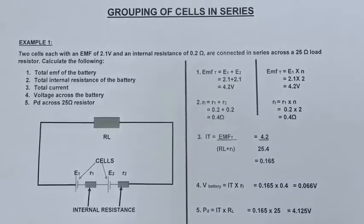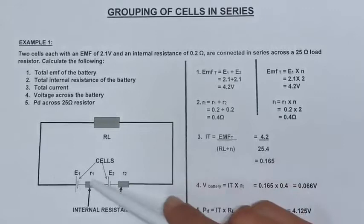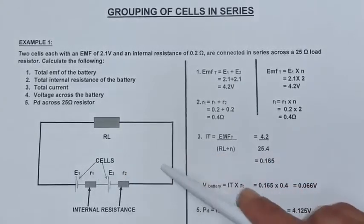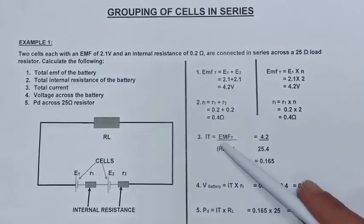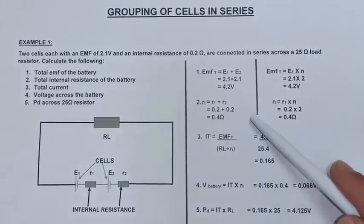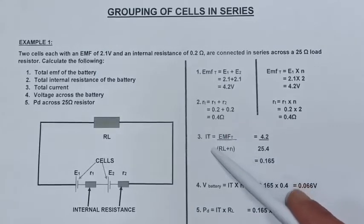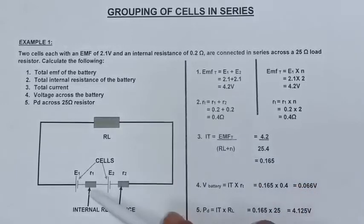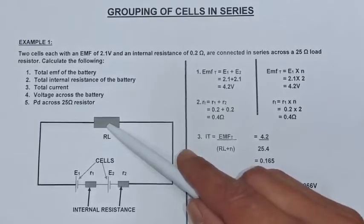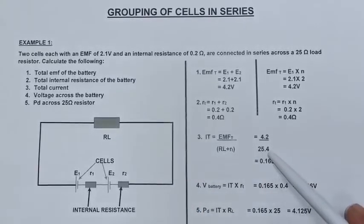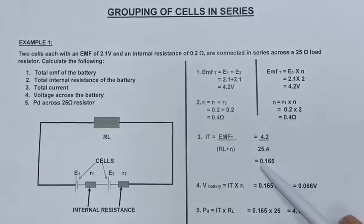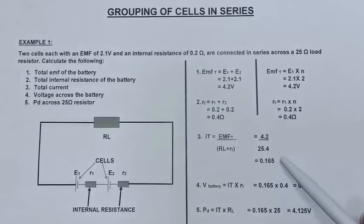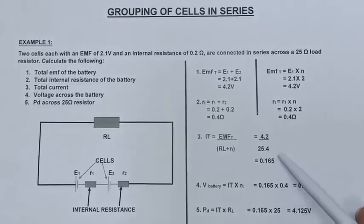Next I am going to calculate my total current flowing in the circuit. Remember we only have one current in the circuit because it is a series circuit. That is going to be my EMF total of 4.2 divided by the total resistance of my circuit, which incorporates all resistances — my internal resistance plus my load resistor — giving me 25.4 ohm. Dividing that gives me 0.165 amps.